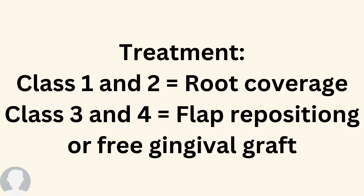For treatment: in Class 1 and 2 there is no bone or soft tissue loss, so we just need to cover up the exposed root. You should visit a periodontist who will plan the treatment. For Class 3 and 4, because there is bone and soft tissue loss, more advanced procedures are needed — such as flap repositioning or a free gingival graft — to cover the exposed roots and address the bone and soft tissue loss.